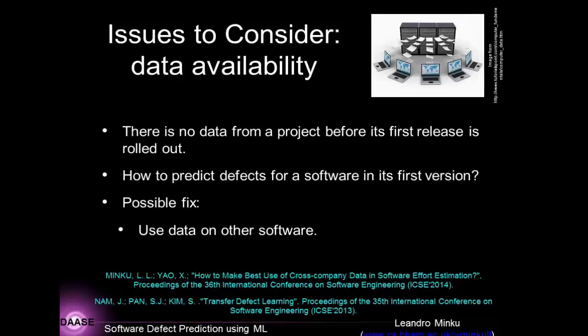Another issue is data availability. There is no data from a project before its first release is rolled out, so how can you make defect predictions for software in its first version? One way to overcome this is to use data from other software you have developed, being careful to select software most similar to what you are currently developing. If the selected software is completely different, the model will not work well.